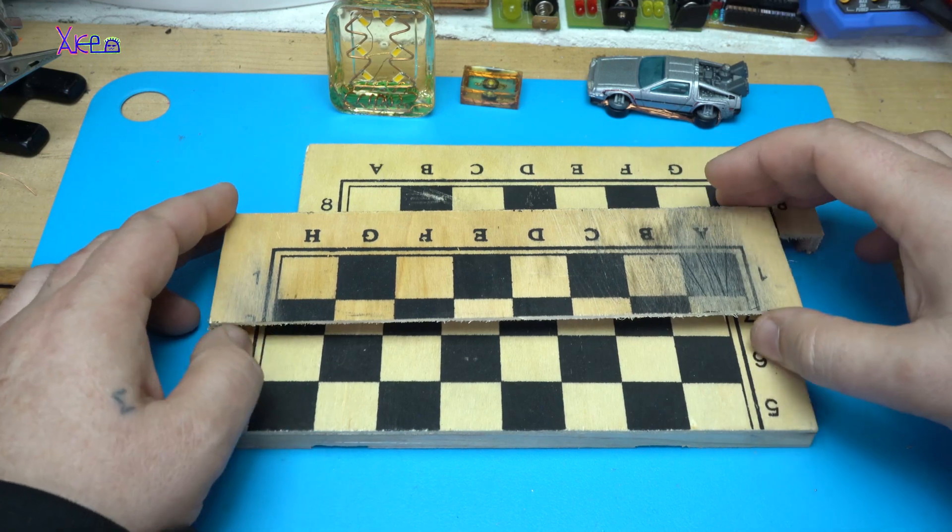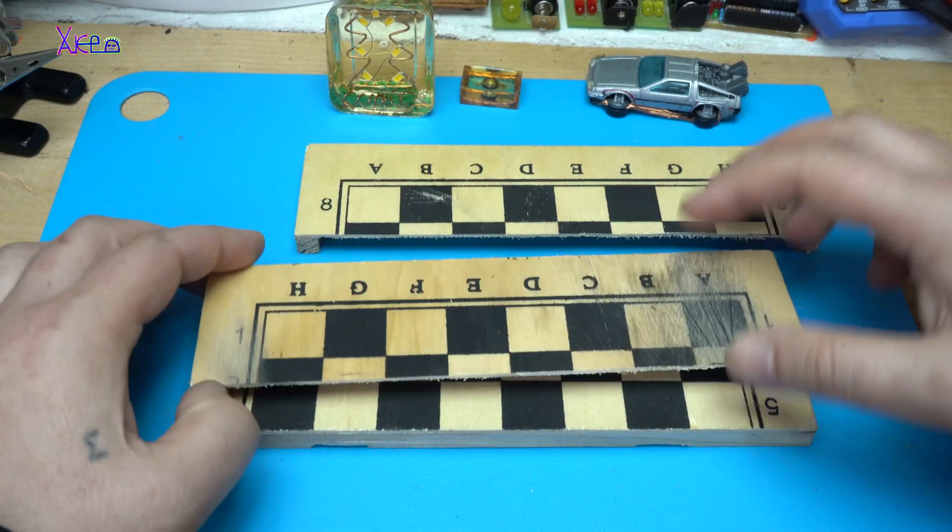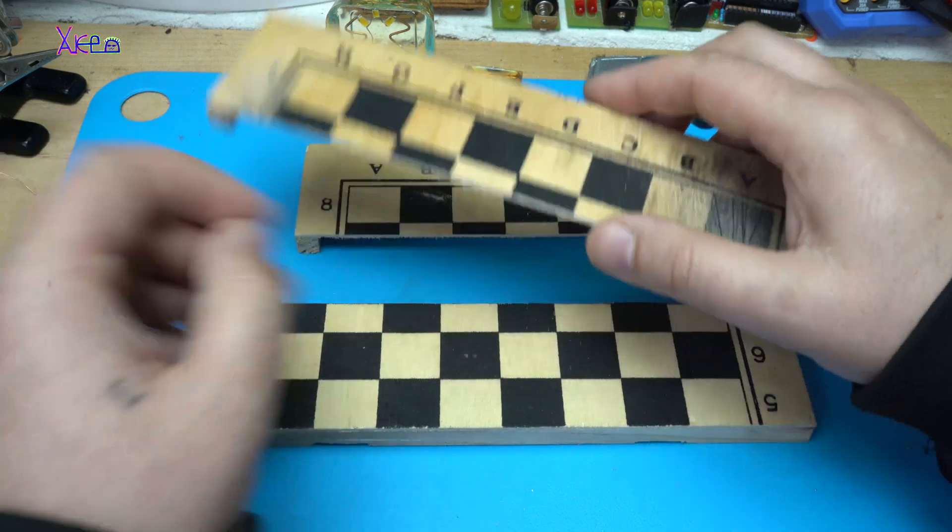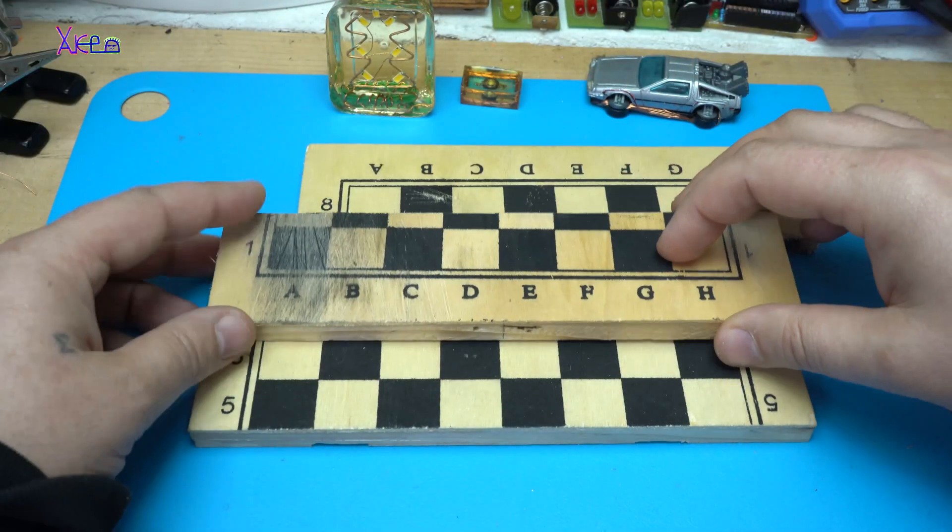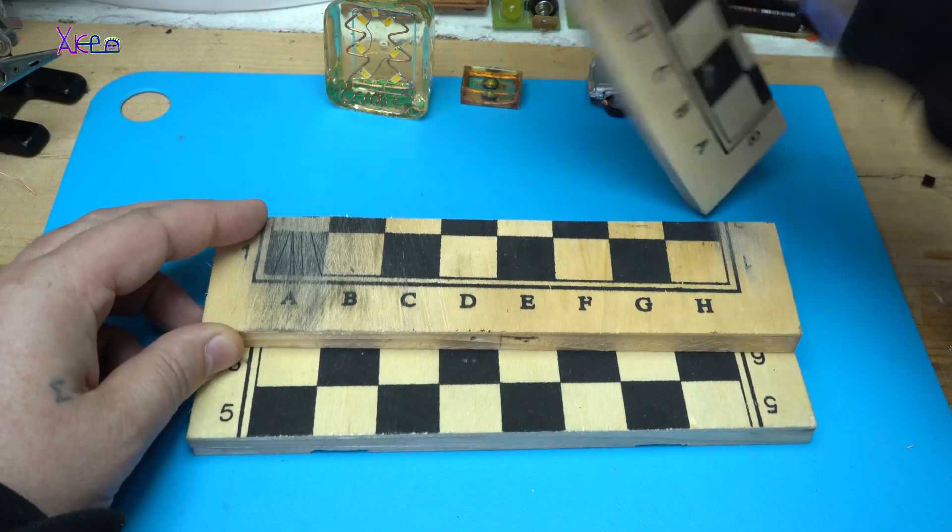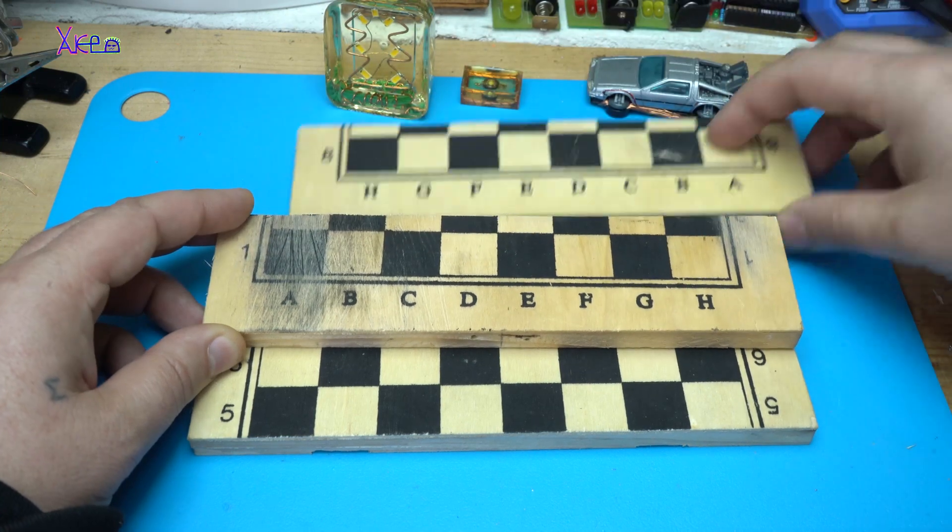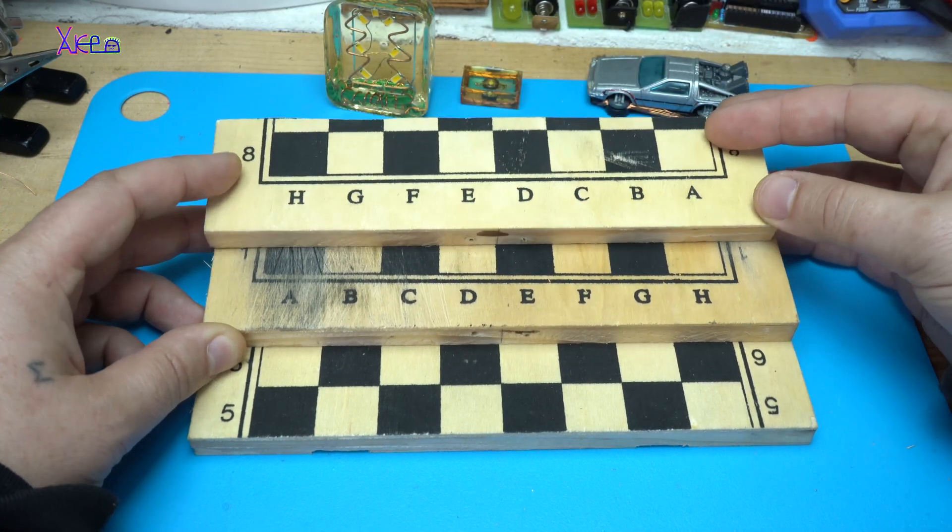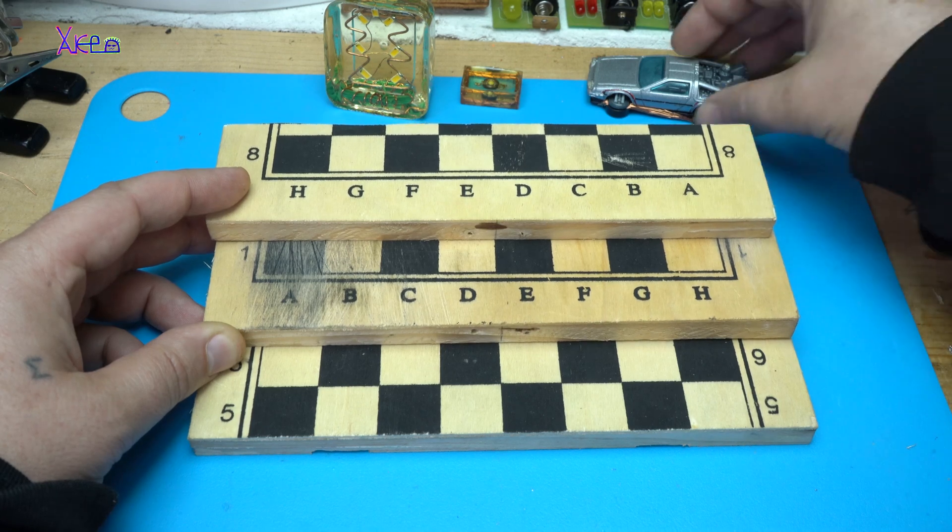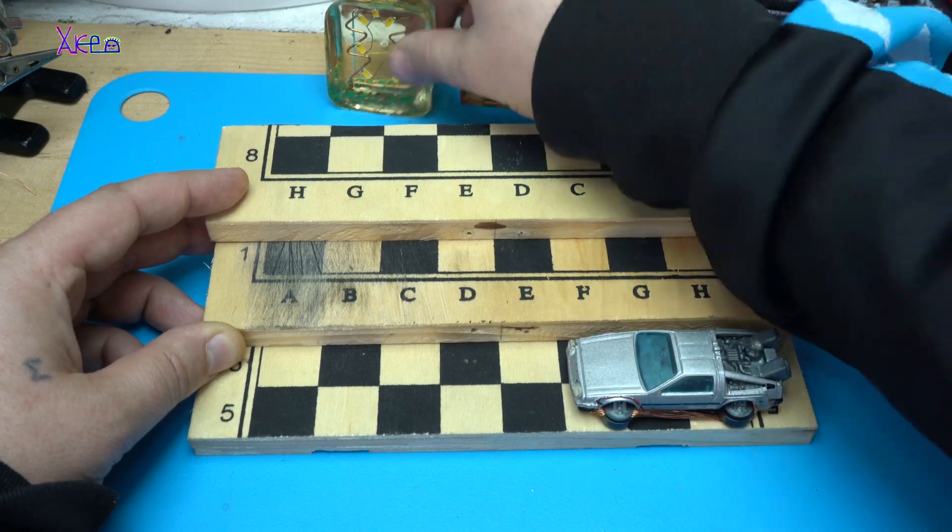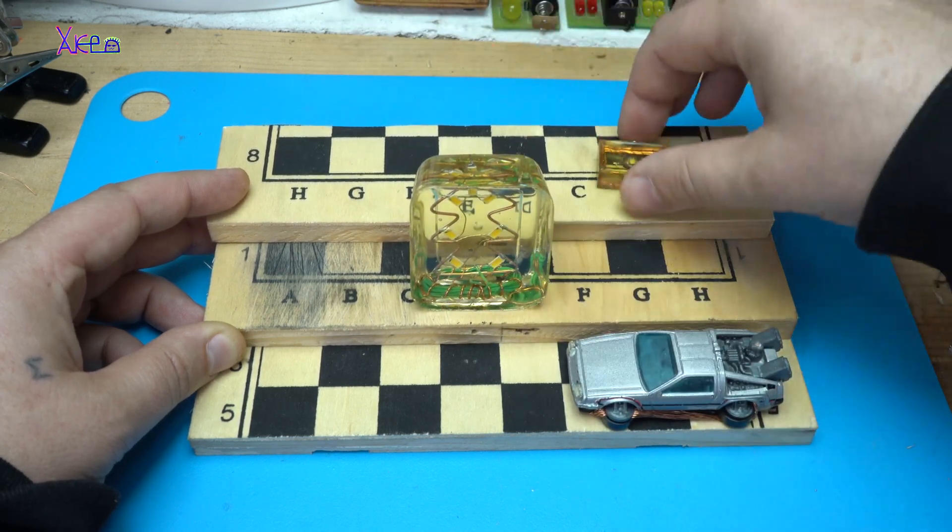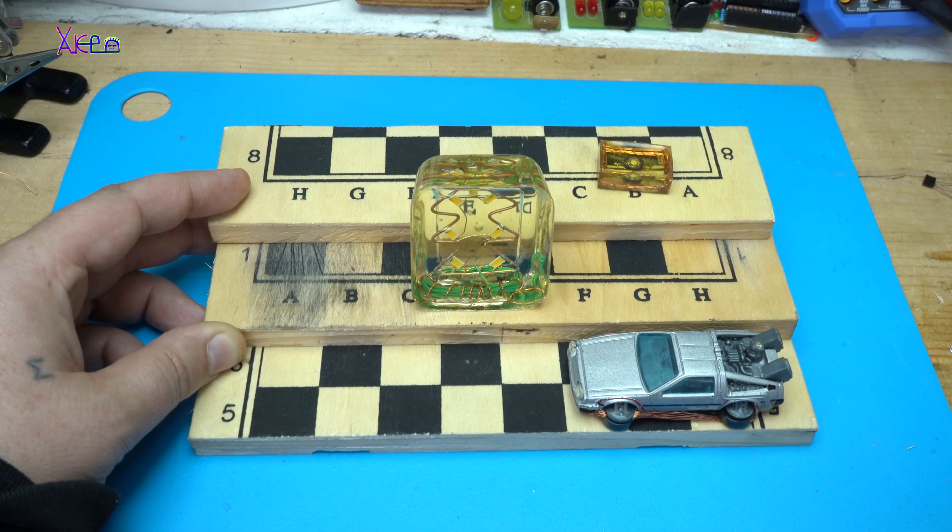But in today's video, as I say, I will try to make a platform on three levels, just like this. So I can place my gadgets and light up all of them at the same time.